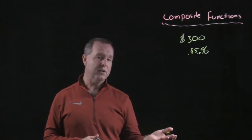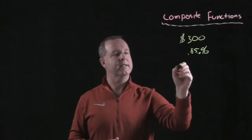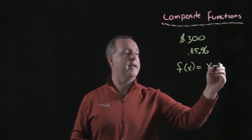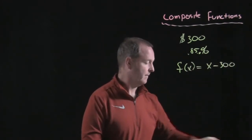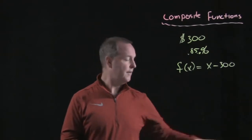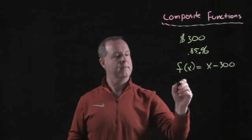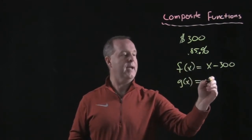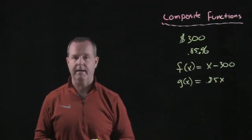In function notation, what that looks like is one discount is its price minus $300. And another one, g of x is .85x or 85% of x.